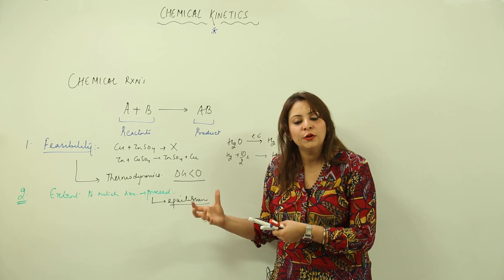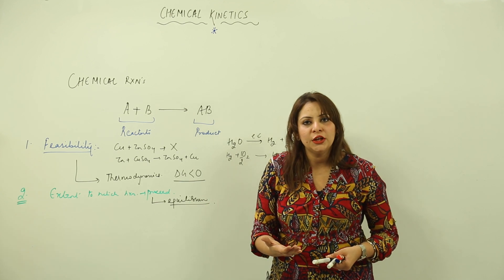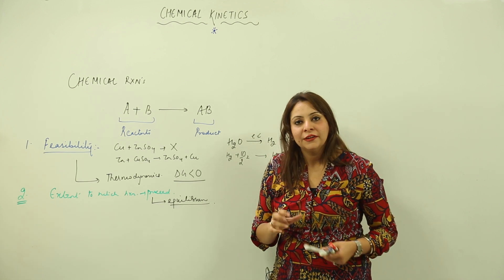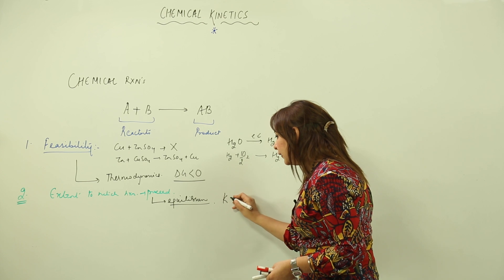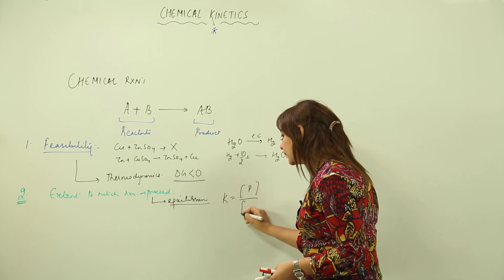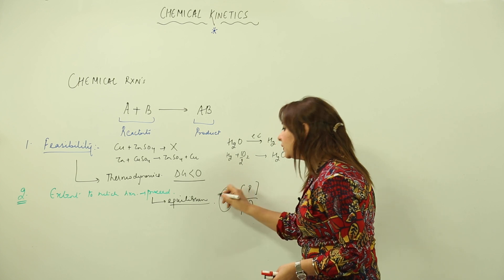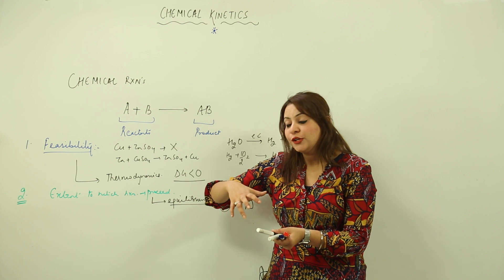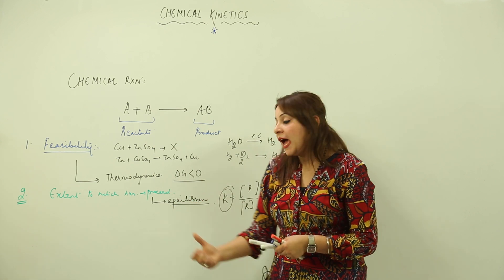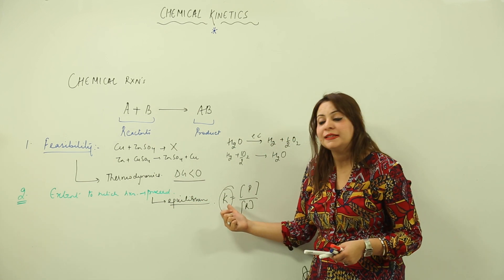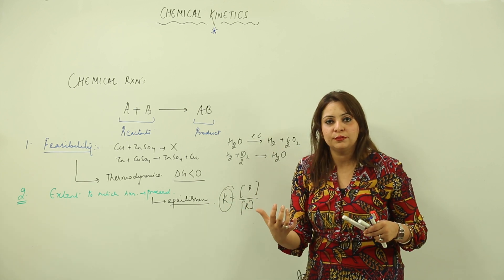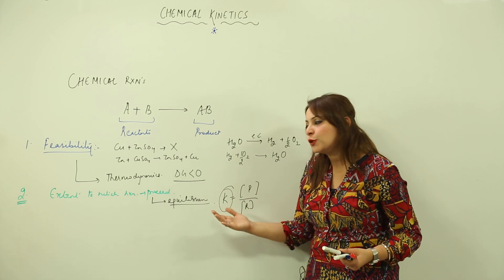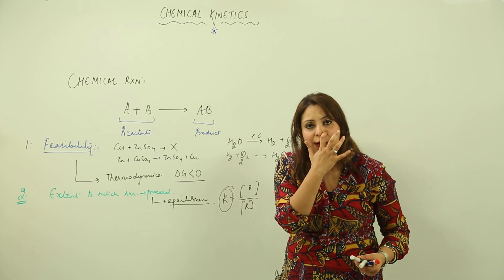We come to know about this concern from equilibrium. We study equilibrium because it makes us aware about the extent to which a chemical reaction is going to proceed. We write the equilibrium constant expression: K equals concentration of product divided by concentration of reactant. A higher value of K indicates that more product is favored, meaning the reaction proceeds in the forward direction. A lower value of K means the reverse reaction is favored. So from equilibrium constant expressions, we get to know about the extent to which the reaction is going to take place.